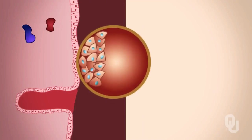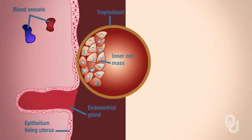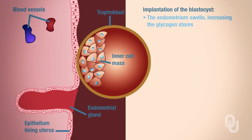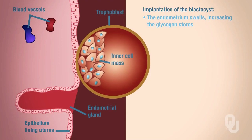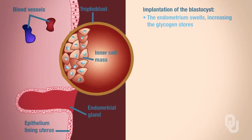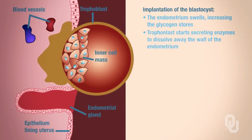The blastocyst will begin the process of implantation. We're in the uterus, and the blastocyst is going to start to implant. First, the endometrium swells and that increases glycogen stores. Continuing on with the process of implantation, the trophoblast starts secreting enzymes, and that's going to start dissolving away the wall of the endometrium—showing how the enzymes are eating away at that part of the wall.